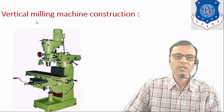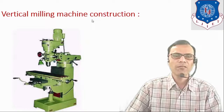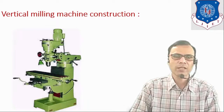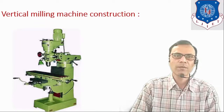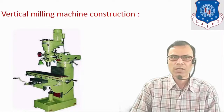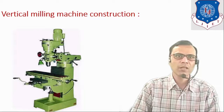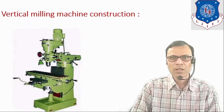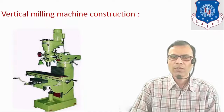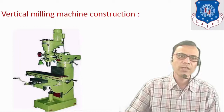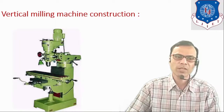The next type is the vertical milling machine. The main difference between the horizontal and vertical milling machine is that in the case of the vertical milling machine, the axis of the spindle rotation is vertical. The function of each part is similar to what we discussed in the case of the horizontal milling machine.